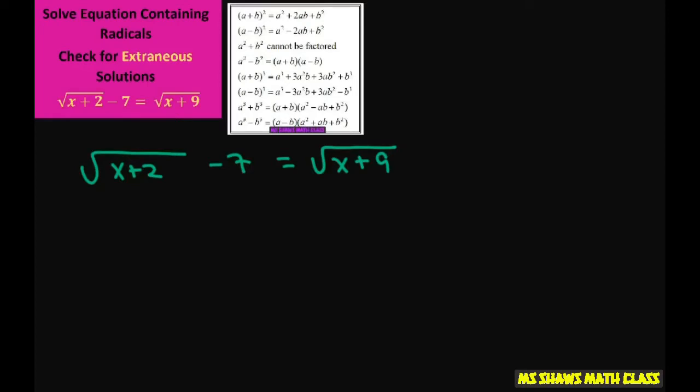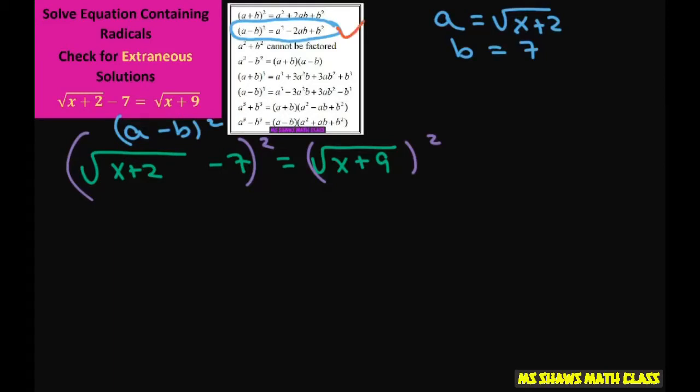And we're going to square both sides. Now this first part we have like an a minus b squared which is this right here. So in our case our a is square root of x plus 2 and our b is 7. So I'm going to expand this with this formula here.